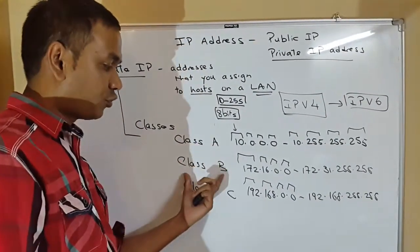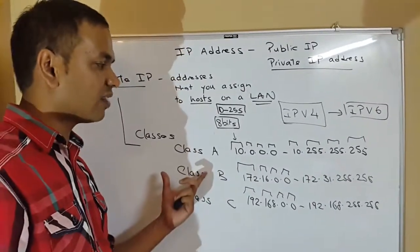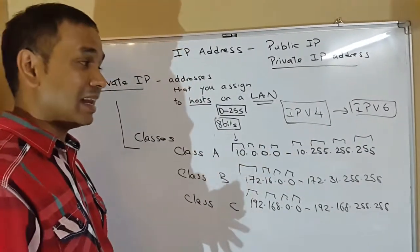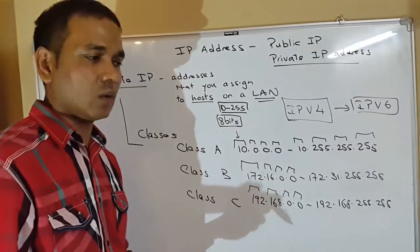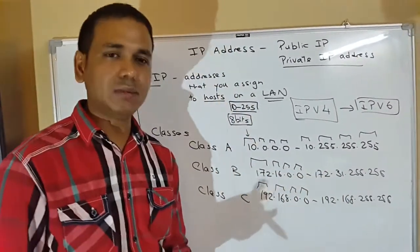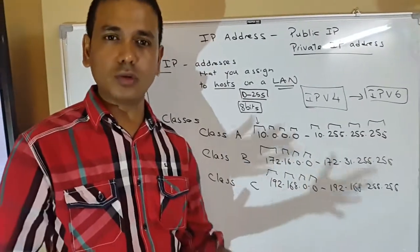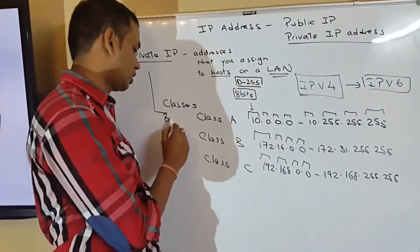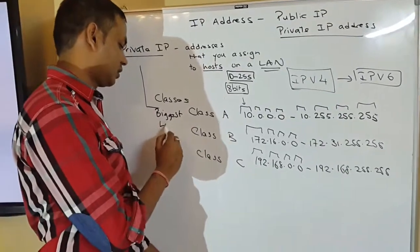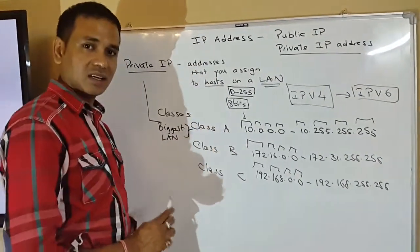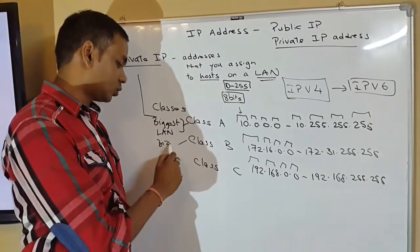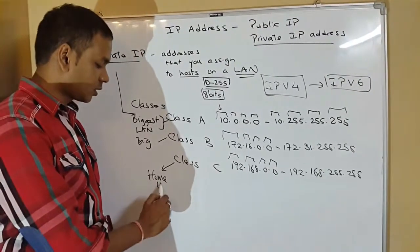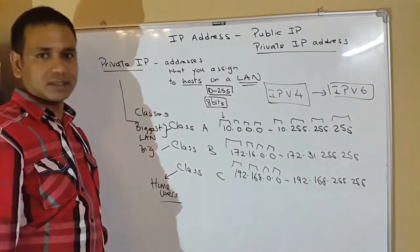Now, why do we have three classes of IP address? We have three classes of IP address because we might have a network that is very big - I mean, local area network. For example, if you take an organization like Microsoft, just imagine the number of people working there, how many computers you can have. So the bigger network, the biggest network normally that they use, the biggest LAN, they use a class A. For big organizations as well, we use class B. But for home users, we use class C addresses.